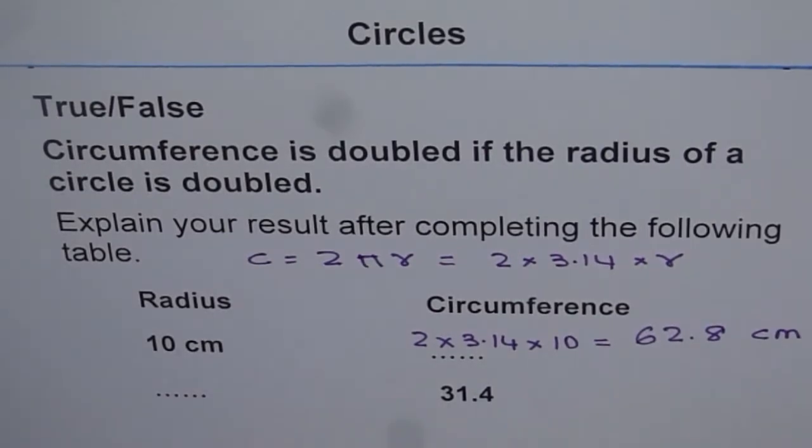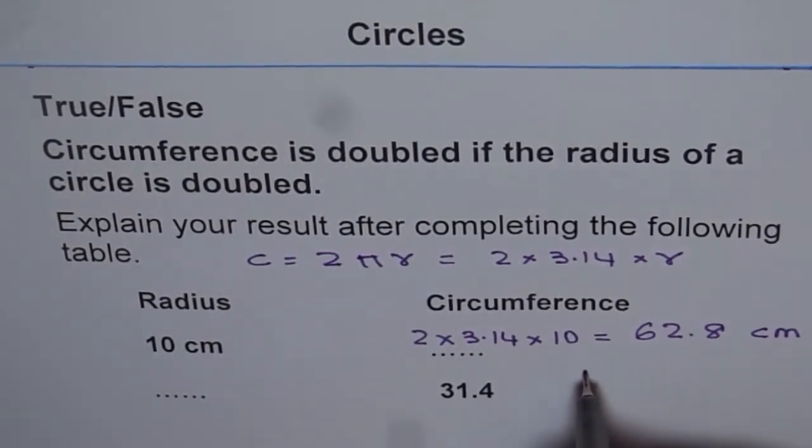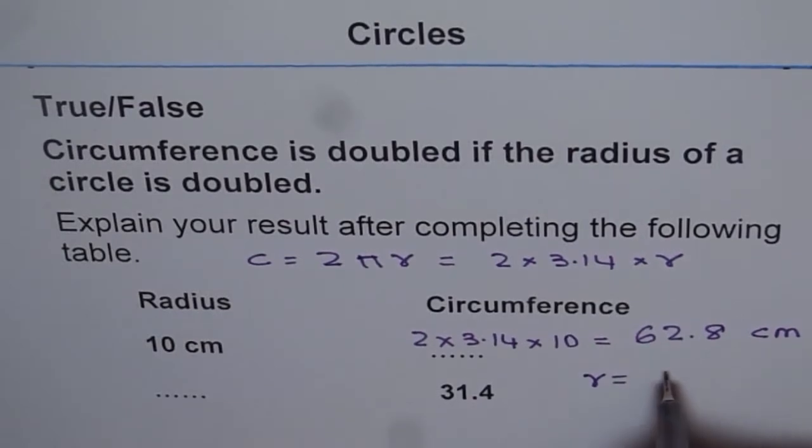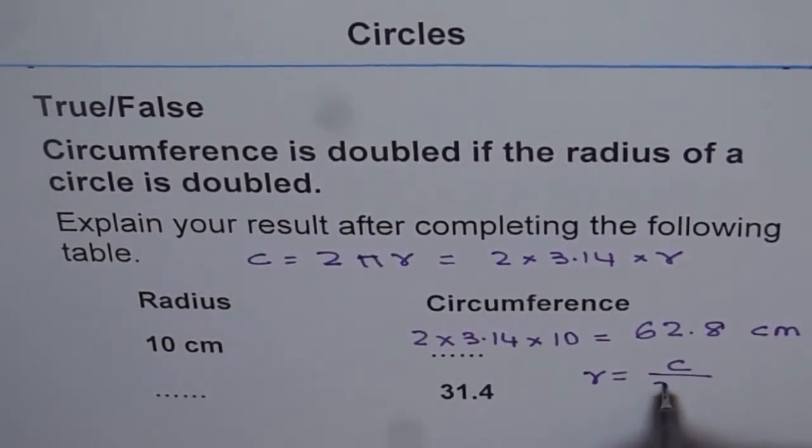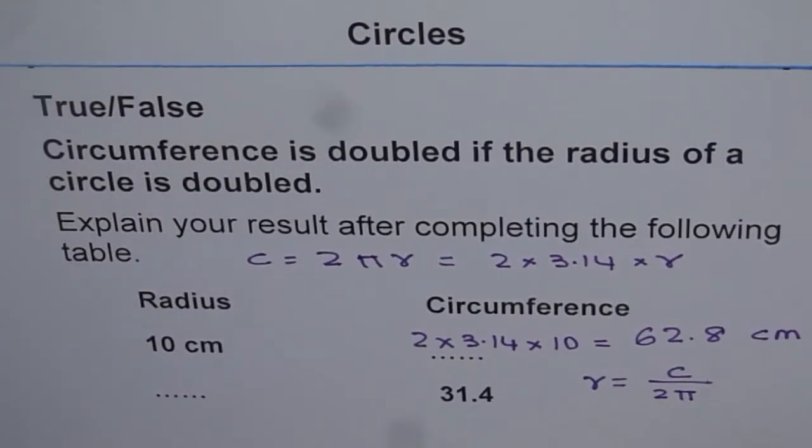Now, we have circumference here. How will you find radius from the circumference? Well, the formula is c equals to 2 pi r. To find radius, what we should do is we should divide c by 2 pi. So, that means radius is equals to circumference divided by 2 pi. That is one way of calculating. So, we can find radius from given circumference.